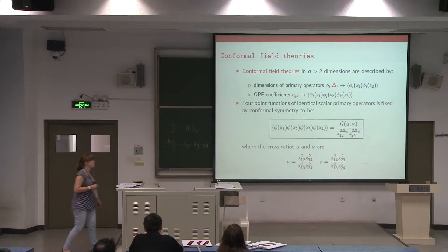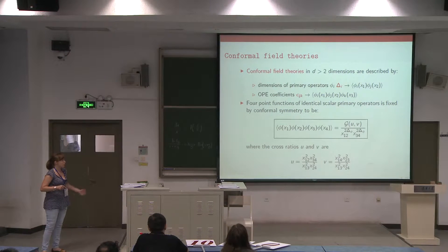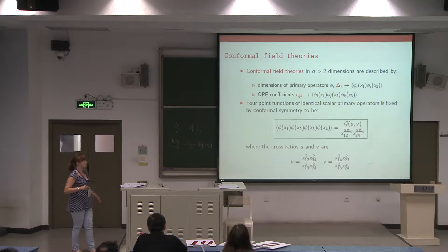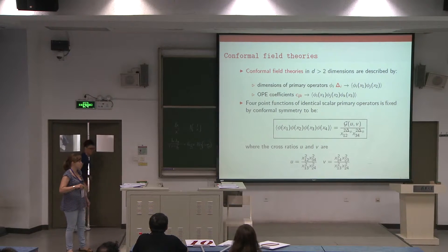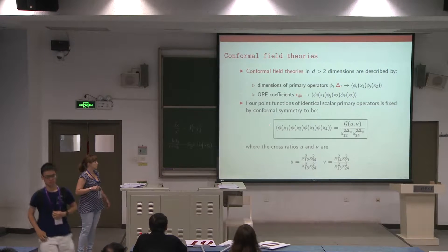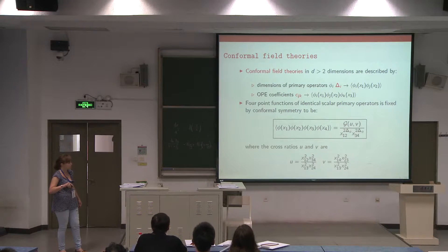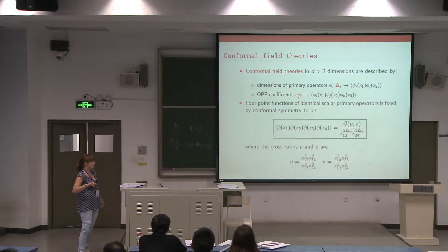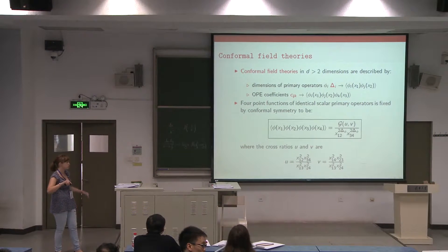Conformal field theories in dimension bigger than 2 are described by the dimension of primary operators, which can be extracted from two-point functions, and by the OPE coefficients of primary operators, which can be extracted from the three-point functions. The first non-trivial correlation function is the four-point function. Here I wrote the one for four scalar operators, and this four-point function can be written as a non-trivial function of u and v, with some extra factors depending on the dimension of the external operator. Here I defined my cross ratios u and v, which are just combinations of distances.